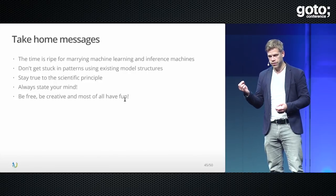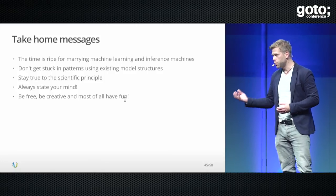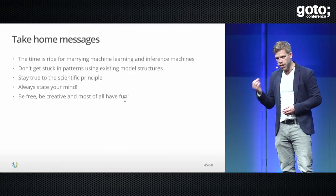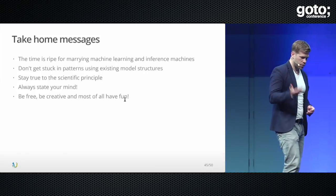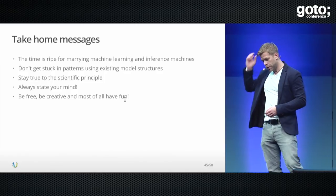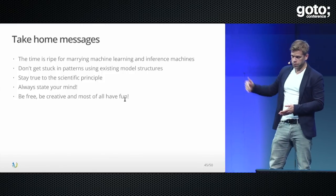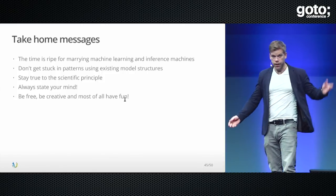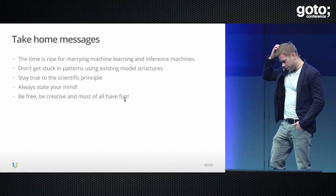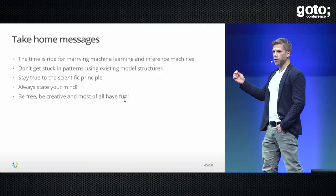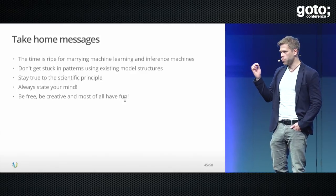Whenever you're solving a problem, I'd like you to think about this: whatever machine learning application you're writing is an application of the scientific principle. Please stay true to that. Science is a way for us to not be biased, a way to discover truths about the world. This should not be ignored or taken lightly — that's why people like Trump can get away with saying there's no such thing as global warming, because he does not adhere to the scientific principle.